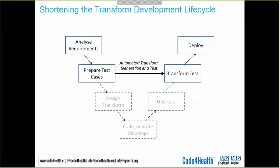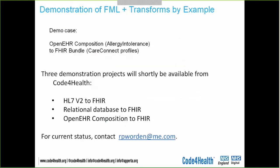With the TBE — Transform By Example approach — only the solid boxes are the things you have to do. You understand your requirements and you prepare very good test cases. From then on, the tools do the rest: they generate the transform in FHIR mapping language or in Java, run it automatically on your test cases, and summarize the results. What you have to do is iteratively refine that transform by improving your examples, and then you can deploy it. This can be a big effort saver in developing transforms.